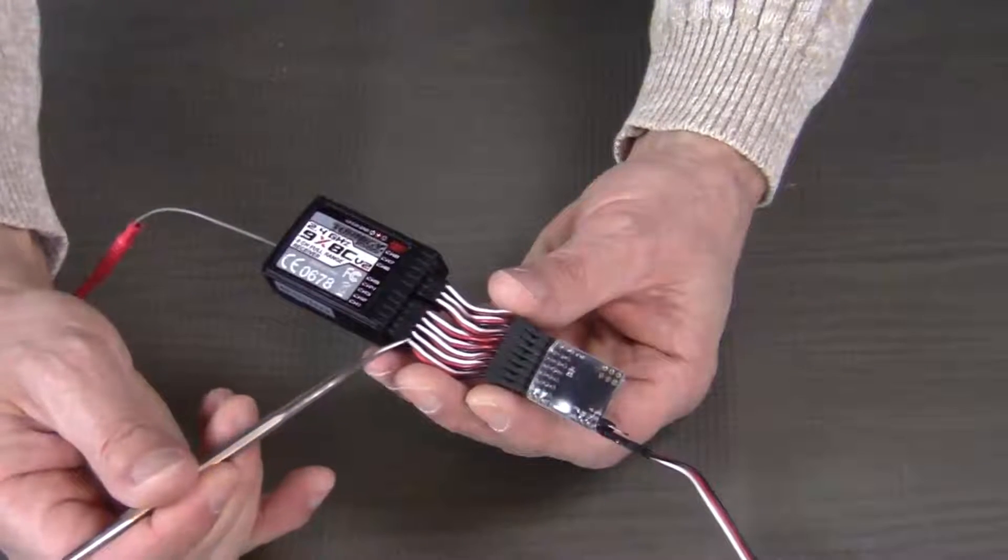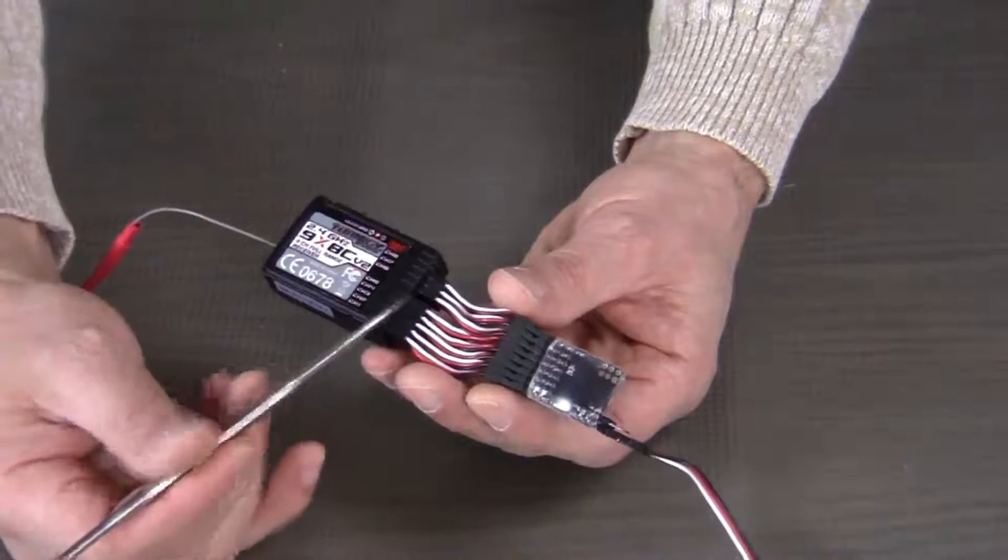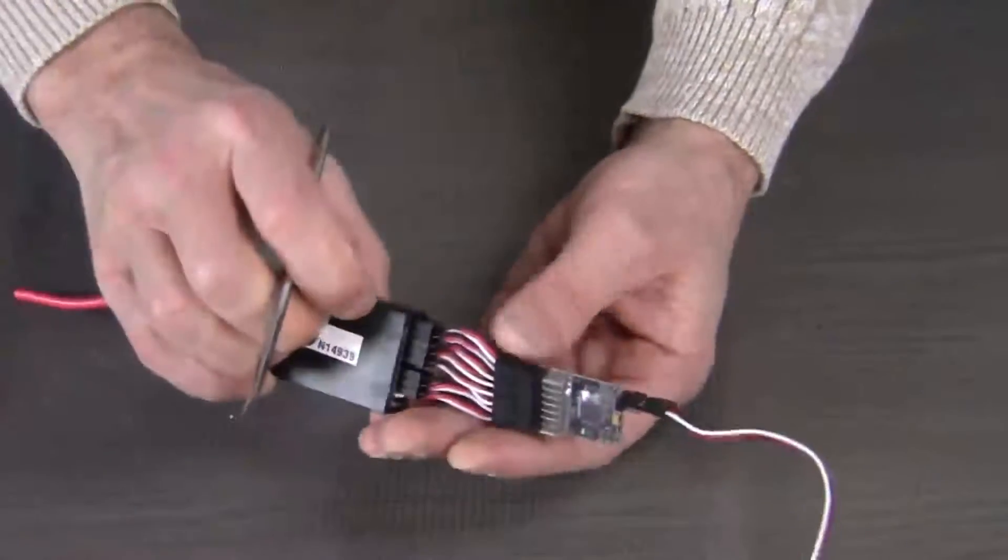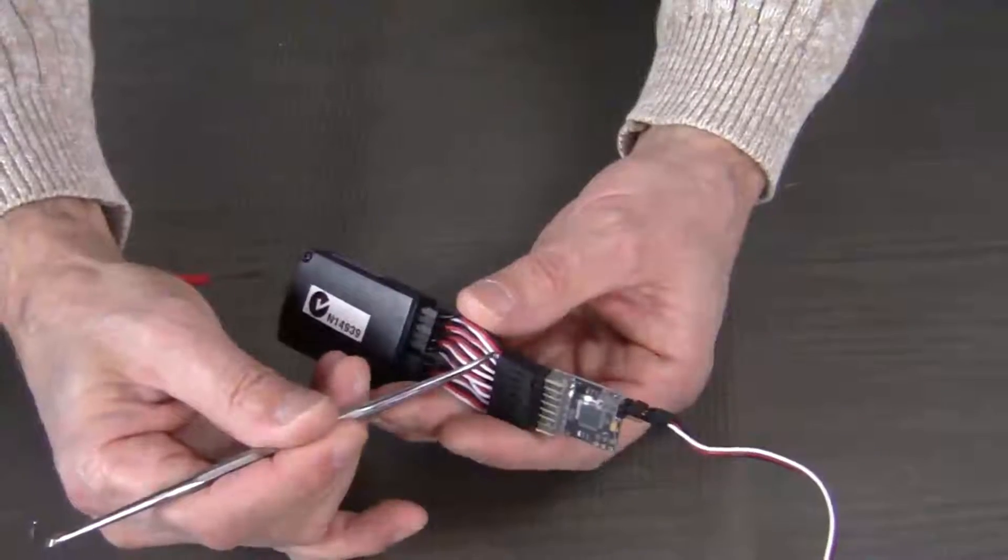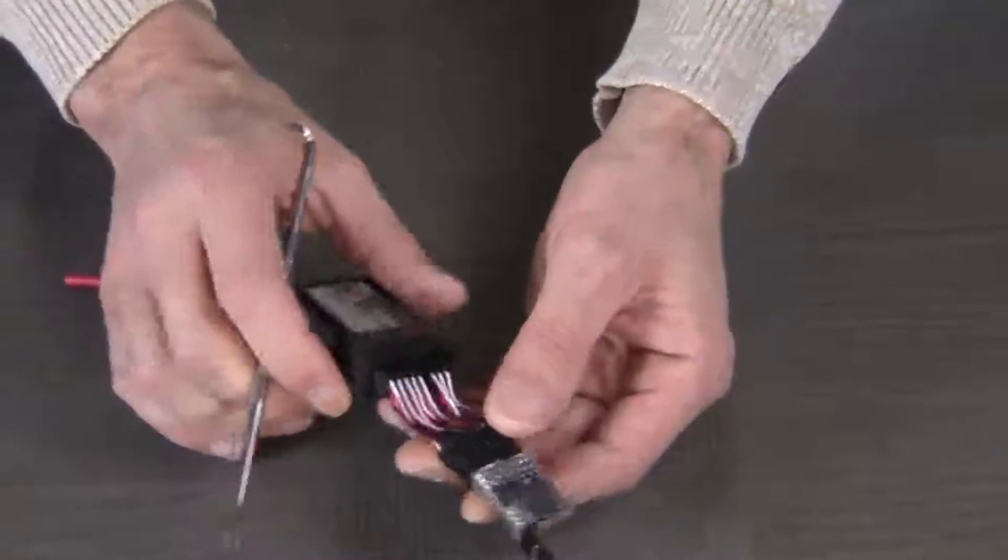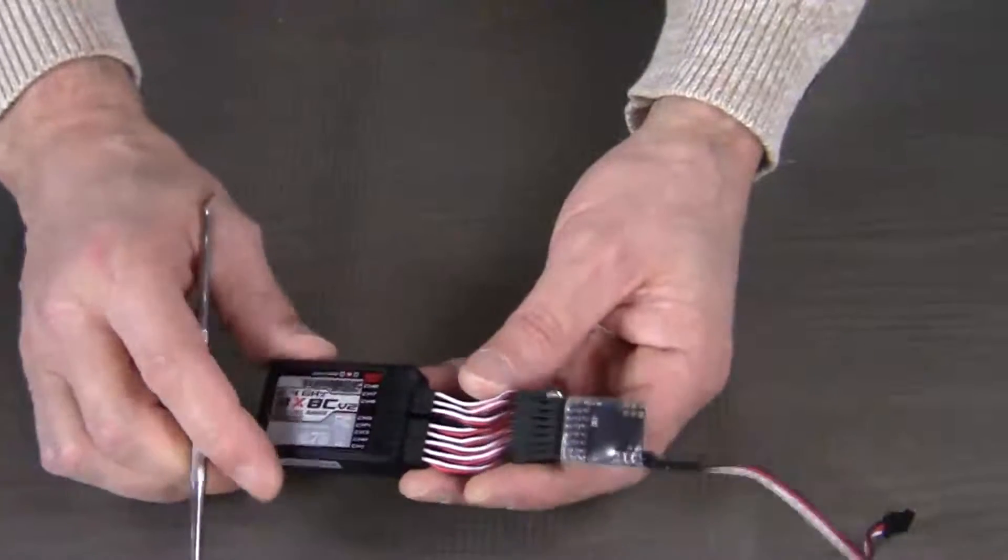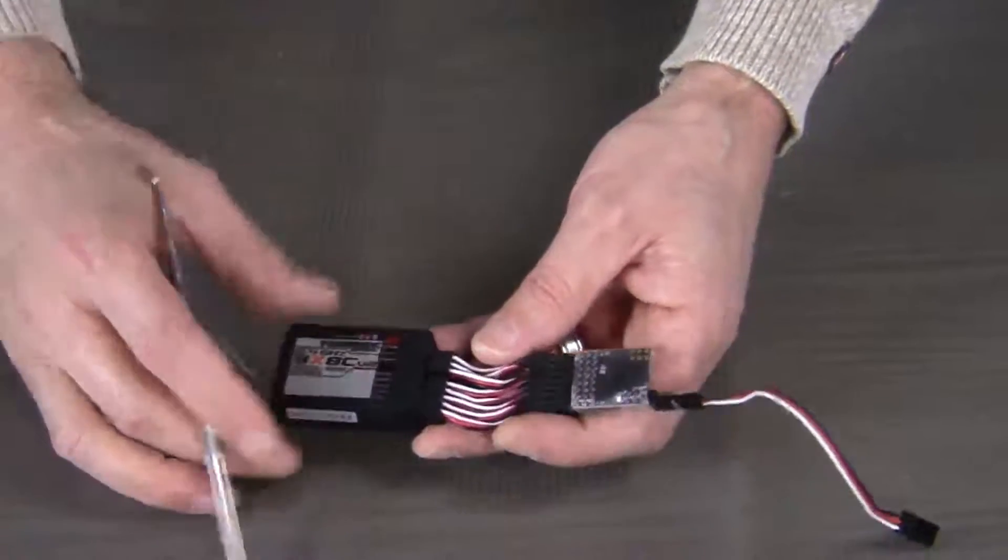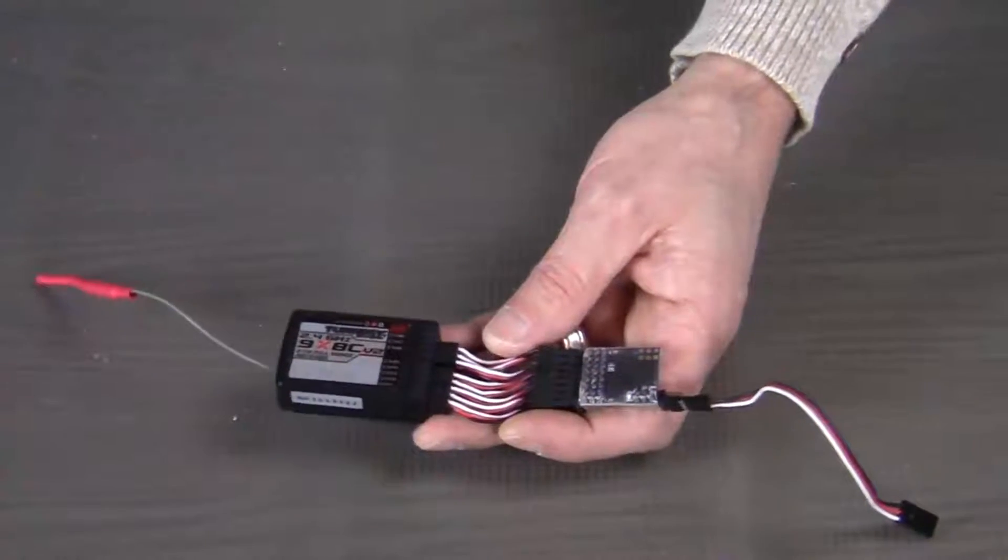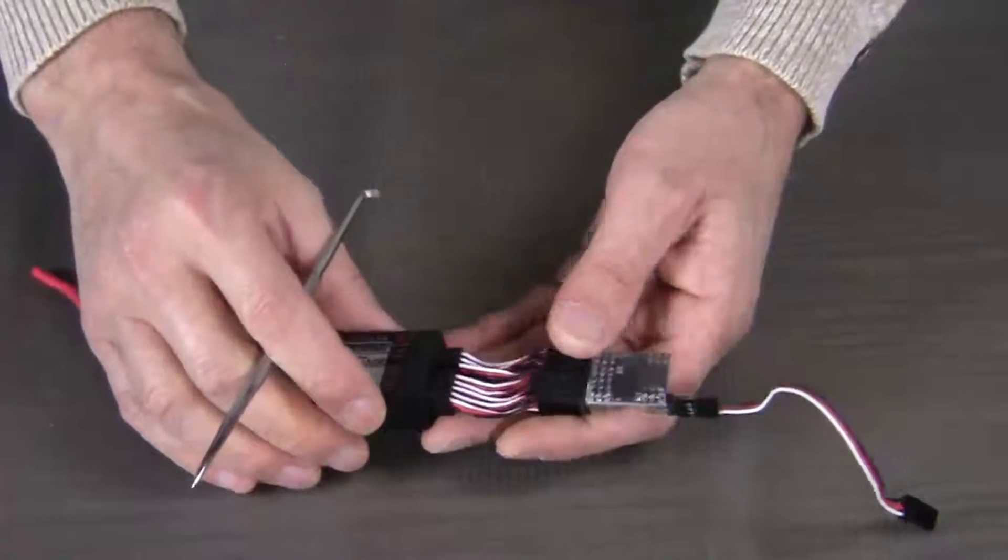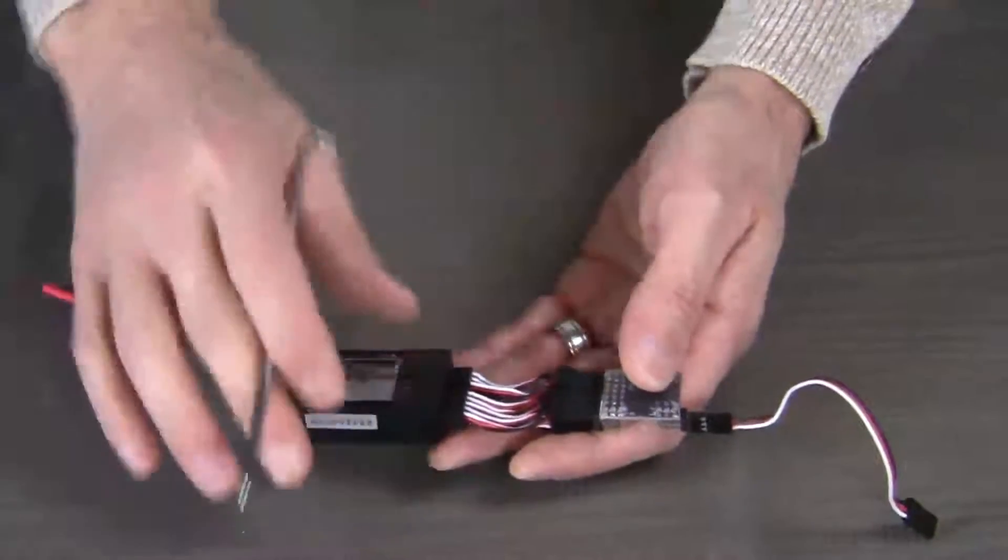Because our signal wire, our white wire, has to be on the top row of the receiver. And then we have to give it a twist so that the signal wire is on the bottom row of the encoder. And that's what gives people a lot of grief when they're trying to connect the Turnigy radio to the encoder.